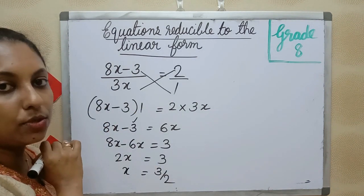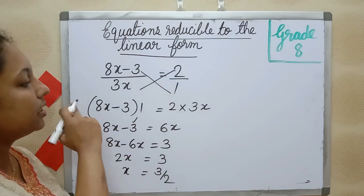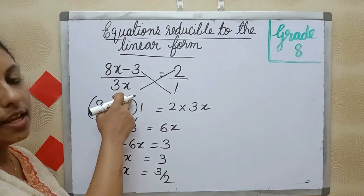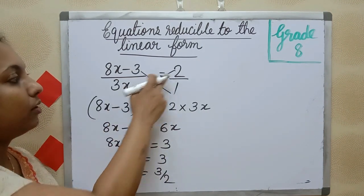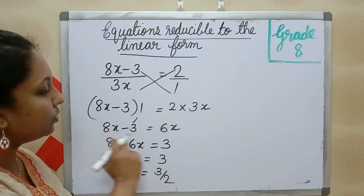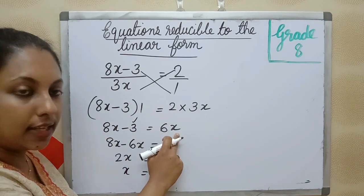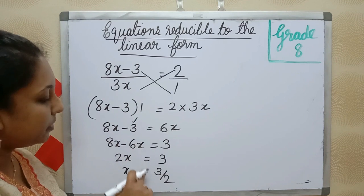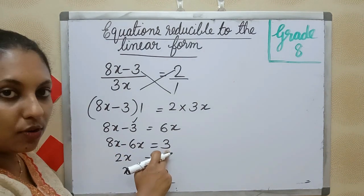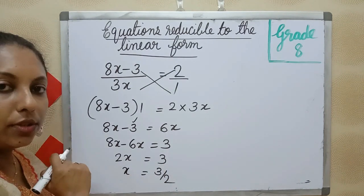So 3 by 2 is the answer. First we have to change the equations in linear form by cross multiplying. The equation will change to linear form. Then transpose method we can use. 8x minus 6x is equal to 3, 2x is equal to 3, and x is equal to 3 by 2.